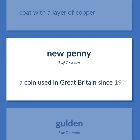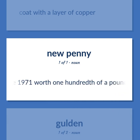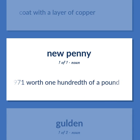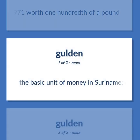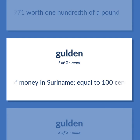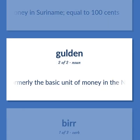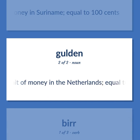A coin used in Great Britain since 1971 worth one hundredth of a pound. The basic unit of money in Suriname, equal to 100 cents. Formerly the basic unit of money in the Netherlands, equal to 100 cents.